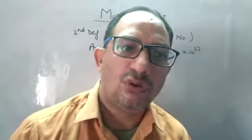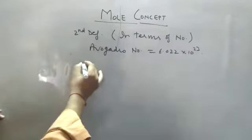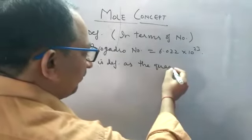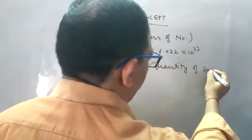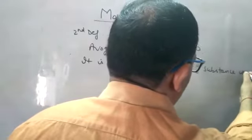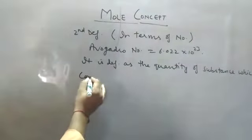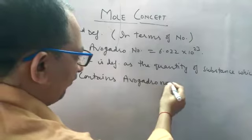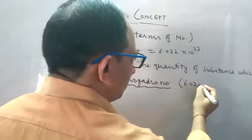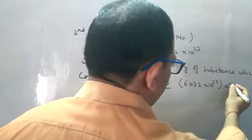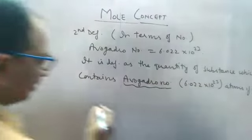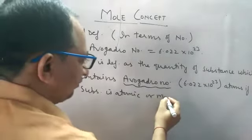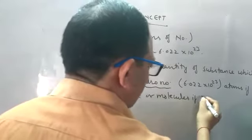The second definition: a mole is defined as the quantity of substance which contains Avogadro's number — that is, 6.022 × 10²³ atoms if the substance is atomic, or 6.022 × 10²³ molecules if the substance is molecular.